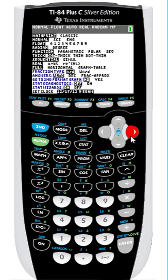The next row allows you to turn Stat Diagnostic on or off. This is a shortcut to the option of displaying R and R-squared when calculating statistical regressions.